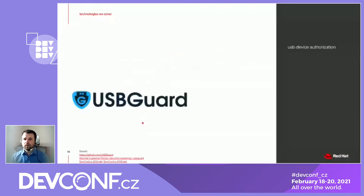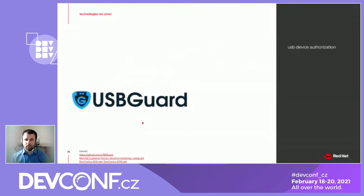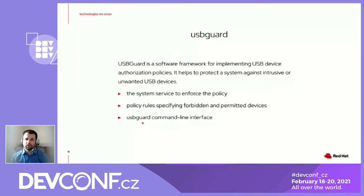Let's jump to USBGuard, which is a tool for USB device authorization. There are links to upstream, the Red Hat portal, and also this year's talk which happened yesterday. USBGuard is a software framework that implements authorization policies for USB devices. It helps protect the system against intrusive or unwanted devices. There are three main parts: the system service which enforces the policy, the policy rules, and the command line interface for managing the rules.